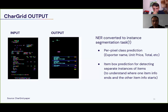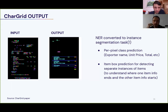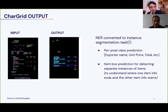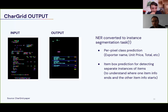As for the network output, for each pixel we simply predict which class it belongs to — exporter name, product price, background, invoice total, etc. This means the task becomes a pixel-level classification, essentially an image segmentation task. But it's not just semantic segmentation — it's actually an instance segmentation task, because we also need to predict where one item's information ends and another begins, which cannot be inferred from pixel class information alone. Thus the task boils down to instance segmentation, which has a large body of research in machine learning.